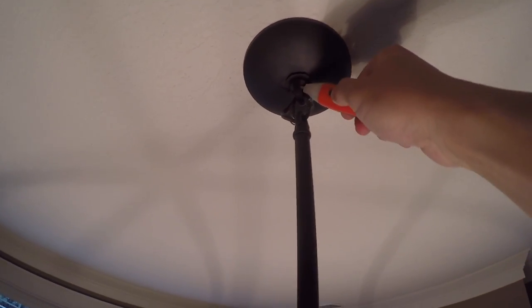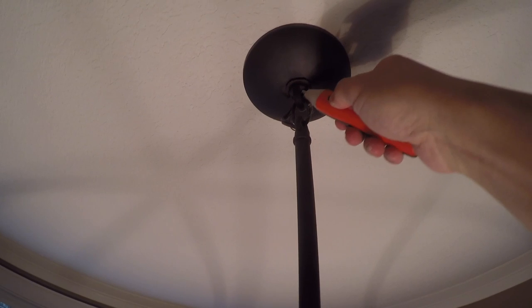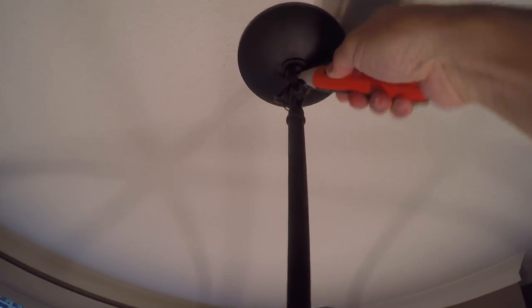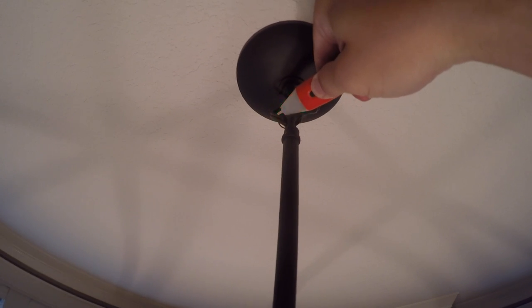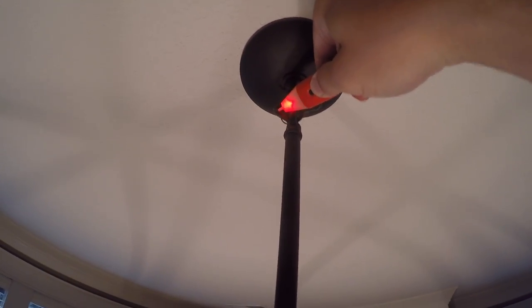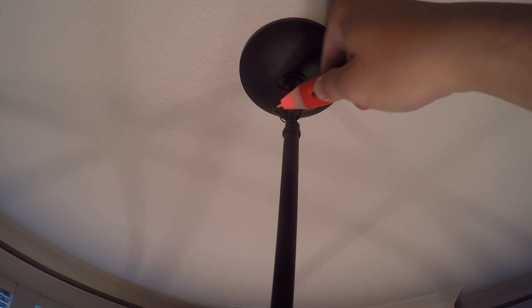The first thing I'm going to verify is the power is shut off. I can use a contact voltage meter and then verify there is electricity running through. So I'm going to turn off the breaker to make sure there's no electricity running through the wires.